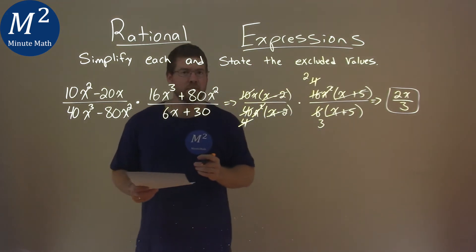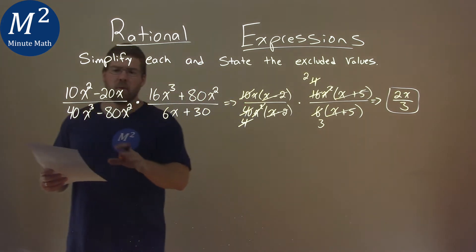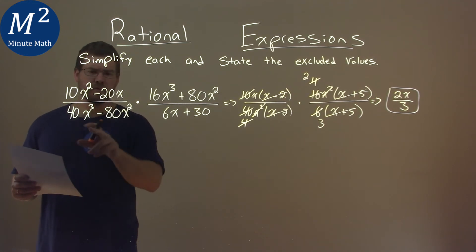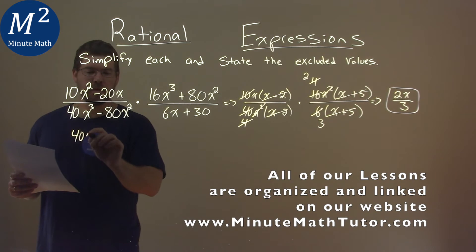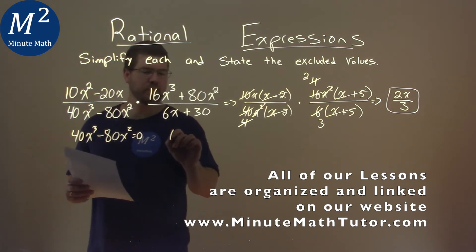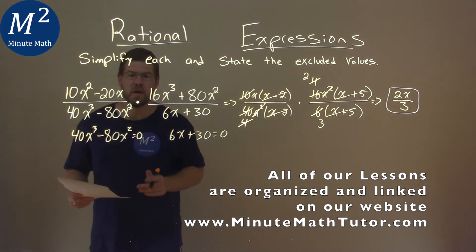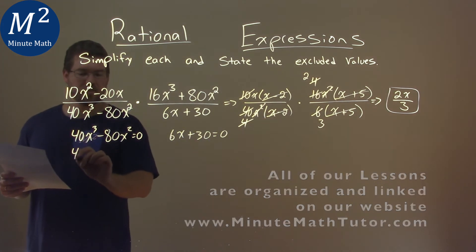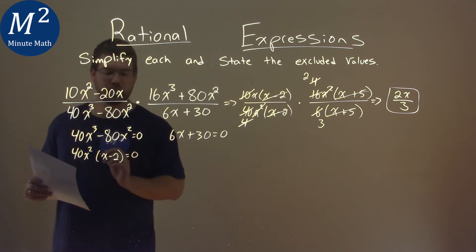But now we have to find our excluded values, and that is when our denominator is equal to 0. So we want to find where we're dividing by 0 and we have to exclude those values. So we're going to take our two denominators right here from the beginning, 40x to the third minus 80x squared. I'm going to set that equal to 0, and 6x plus 30 equal to 0. Well, luckily we already did some factoring here. Pull out a 40x squared, and that's going to be an x minus 2 equal to 0.